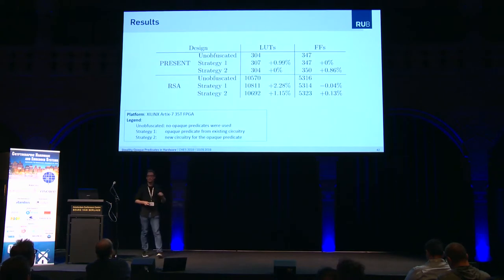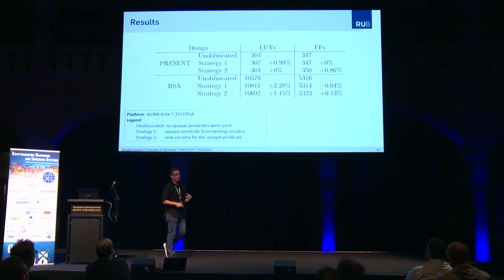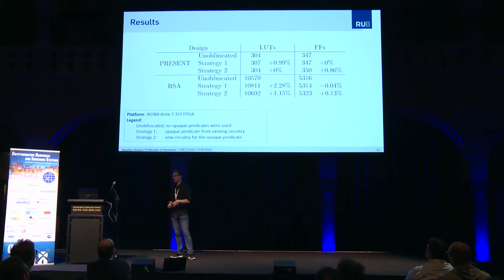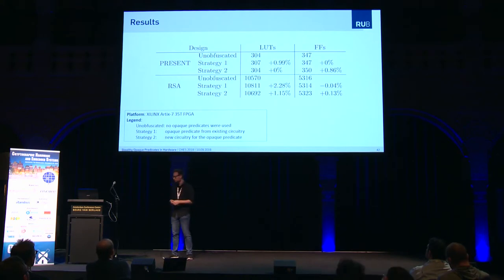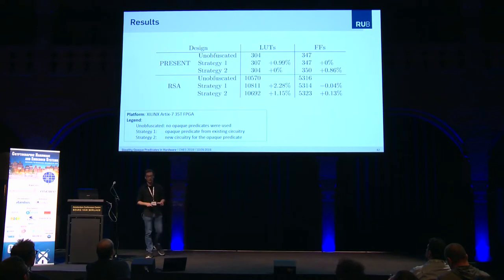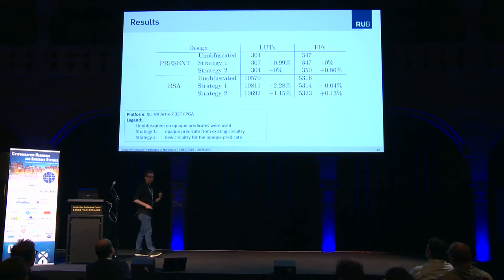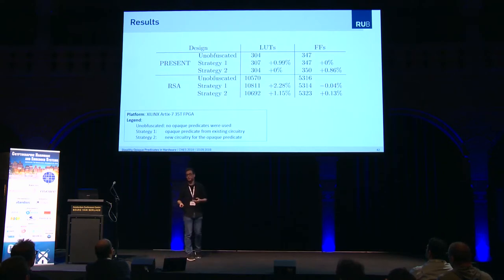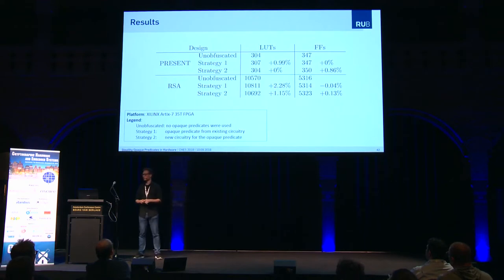And these are the results. Strategy one is always obfuscated with existing circuitry, and strategy two with additional circuitry where we added an FSM module of the average size of the other FSMs in the design. What is really nice to see is that we achieved super low overhead. In one case, the additional wires we introduced even helped the synthesizer improve the design and save two flip-flops.